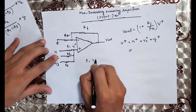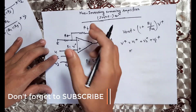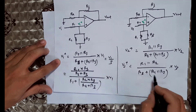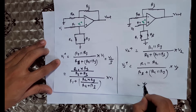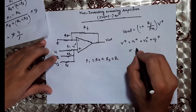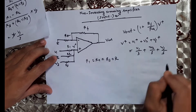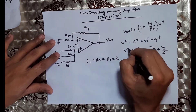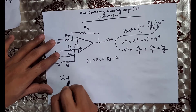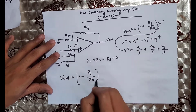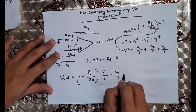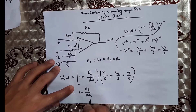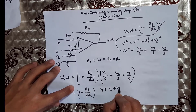For the special case where R1 equals R2 equals R3 equals R, the total V+ simplifies to V1 divided by 3 plus V2 divided by 3 plus V3 divided by 3, which equals V1 plus V2 plus V3 divided by 3.